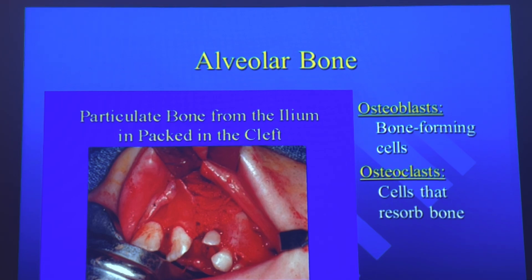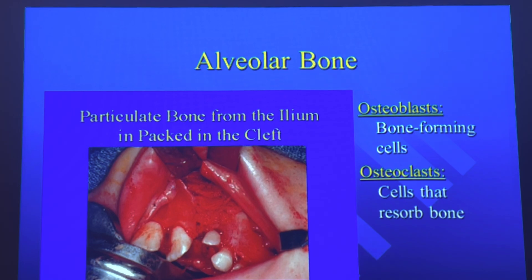When doing something like an impacted canine, you have to expose the gum, expose the tissue and the tooth, put one of the buttons with the chain on it, and slowly drag that down so it comes into occlusion. The osteoblasts and osteoclasts are both working together in that process.